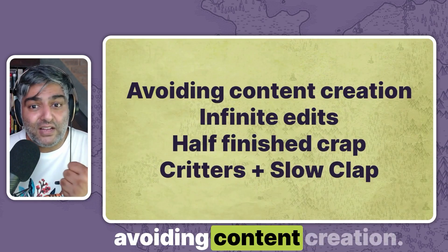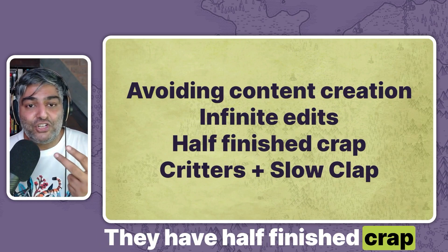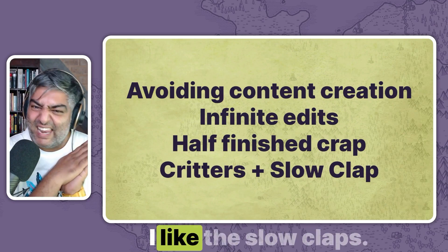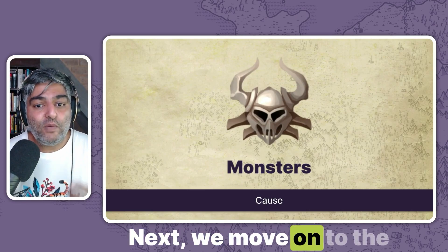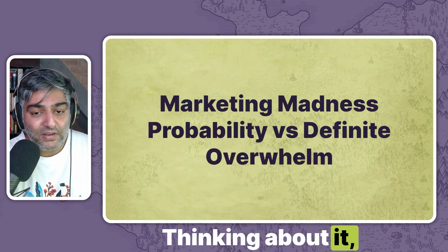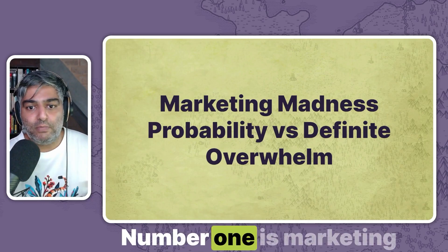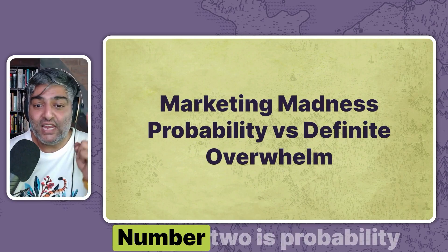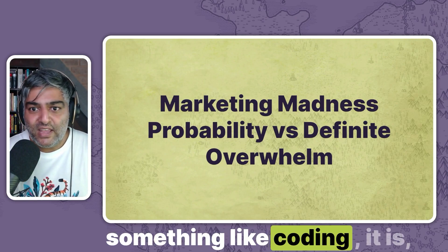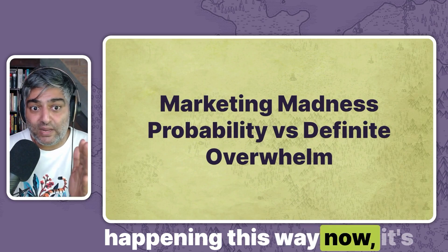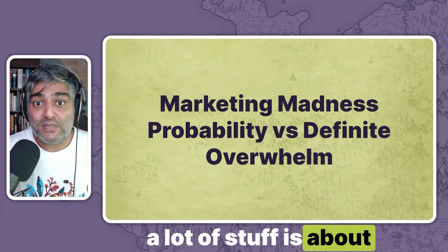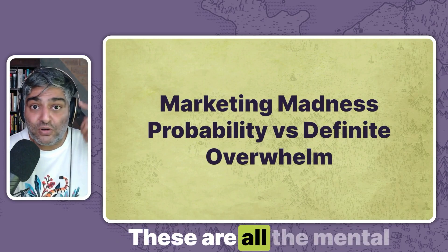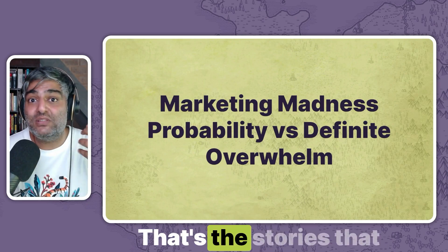The situation is that they're avoiding content creation, they're stuck in an infinite edit loop, they have half-finished crap clogging up their C drive or D drive, and when they launch this content they get the slow clap. That is the situation part. Next, we move on to the cause, which is where we talk about the monsters. There are three main fundamental causes for all those problems. Number one is marketing madness — everybody's just focused on appeasing the algorithm gods, they've forgotten that we have to write to the human. Number two is probability versus definite results: when you're doing something like coding, it's a deterministic system, whereas in marketing a lot of stuff is about probability of success. Finally, overwhelm — marketing is so hard, it takes so much time, there is so much effort. These are all the mental stories running in my customer's head.